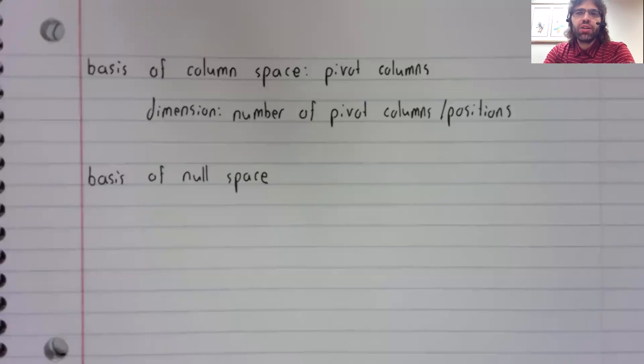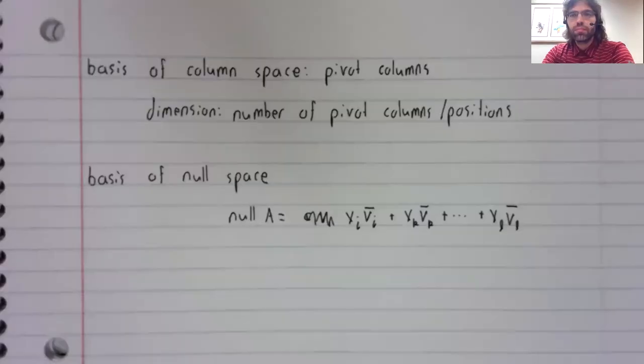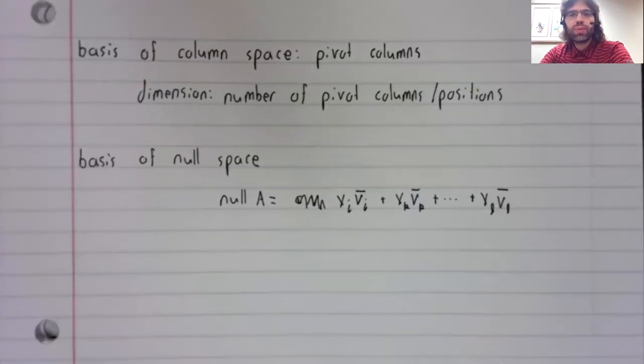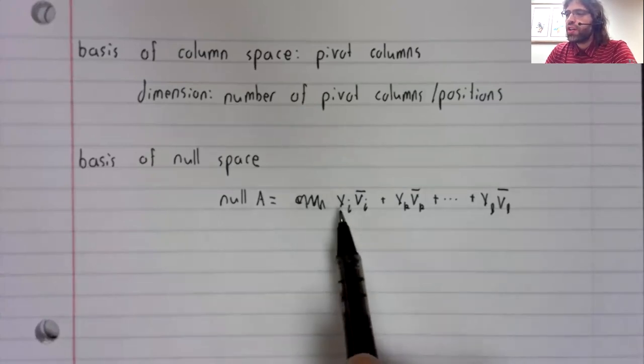Describing the null space is a little more time consuming, but the null space of a matrix is a linear combination of vectors, which are a basis of the null space. That is to say, the null space of a matrix looks like this, and these coefficients...